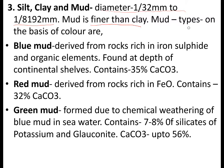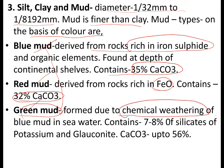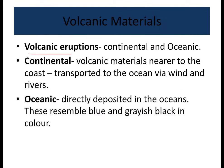Mud types can be classified on the basis of color: blue mud, red mud, and green mud. Blue mud is derived from rocks rich in iron sulfide and organic elements, found at the depth of continental shelves, and contains 35% calcium carbonate. Red mud is derived from rocks rich in iron oxides and contains 32% calcium carbonate. Green mud is derived from blue mud through chemical weathering and transformation in seawater, containing 7–8% silicates of potassium and glauconite, and up to 56% calcium carbonate.